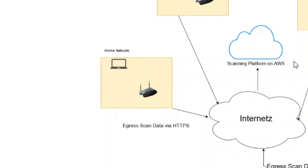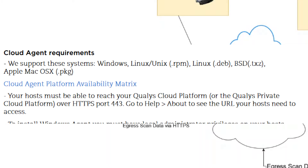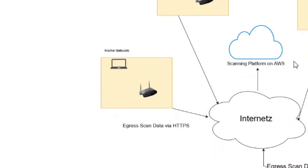All these private networks communicate via HTTPS — normal internet traffic — to a central scanning platform. That central scanning platform is where you pull the vulnerability data and review which devices are problematic. The downside of agent scanning is it only supports Windows, Mac, Ubuntu, and a few other operating systems — you can't scan ICS and other critical infrastructure systems. But there is a win because most of what you'll be scanning is probably workstations.